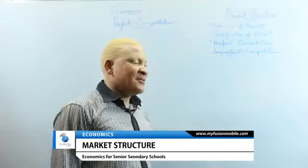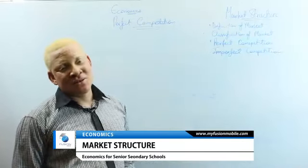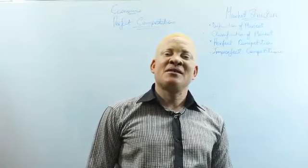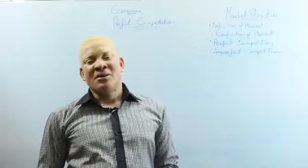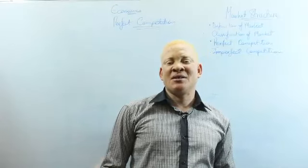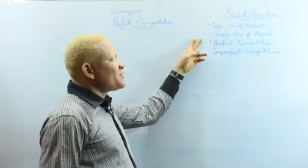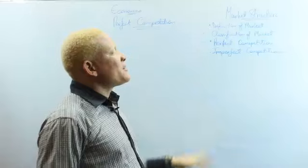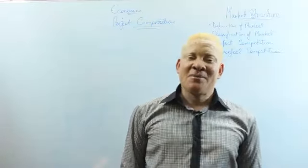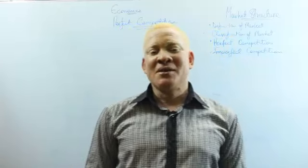Welcome back. We will be taking a look at the first market structure — perfect competition, or the perfect market. The structure of a market means classifying markets according to the players, the number of players, and the methods of price determination or output determination. Perfect competition talks about the type of market that involves so many buyers and many sellers, such that no single buyer or seller is big enough to influence the market conditions.